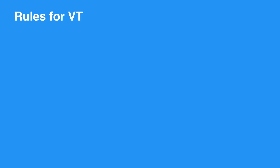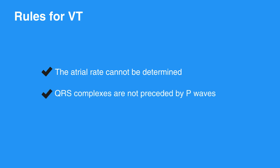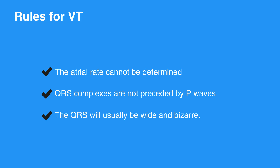The rules for VT include R-R intervals that are usually, but not always, regular. The atrial rate cannot be determined. The ventricular rate is usually between 150 and 250 beats per minute. QRS complexes are not preceded by P waves; there are occasionally P waves in the strip, but they are not associated with the ventricular rhythm. The PR interval is not measured since this is a ventricular rhythm. The QRS complex measures more than 0.12 seconds, will usually be wide and bizarre, and it is usually difficult to see a separation between the QRS complex and the T wave.